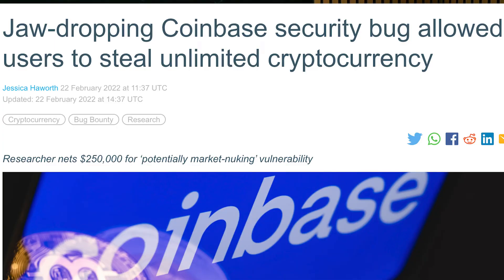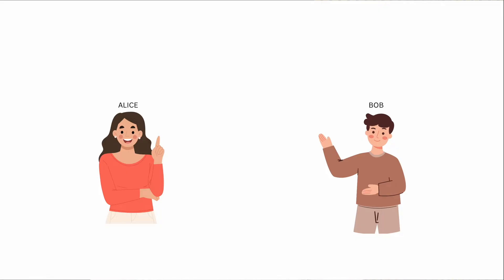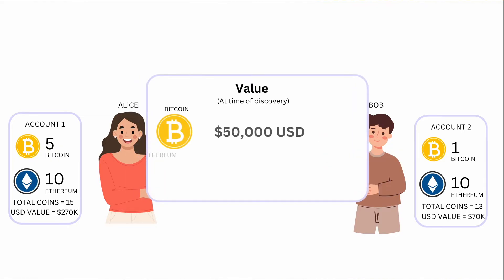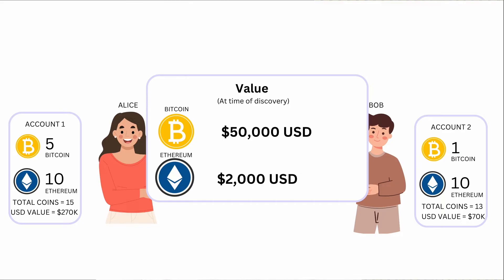The scenario I'm talking about happened to Coinbase, a cryptocurrency exchange, and it was discovered in 2022 — it had existed pretty much from 2013 when it was launched. I'm going to use the same two people to describe the scenario. We have Alice and Bob, and Alice wants to send Bob two Bitcoin, which is a lucky day for Bob because that's like over a hundred grand worth of value. Inside Alice's account, let's say she has a total of five Bitcoin and ten Ethereum. What's important to know is that Bitcoin is valued at 20 to 30 times more than Ethereum.